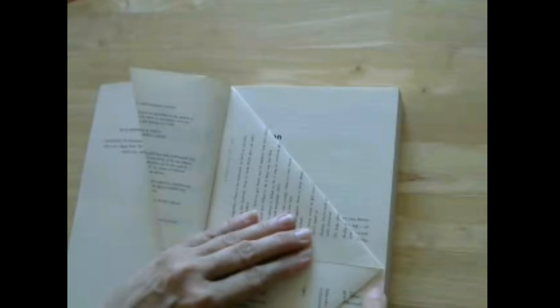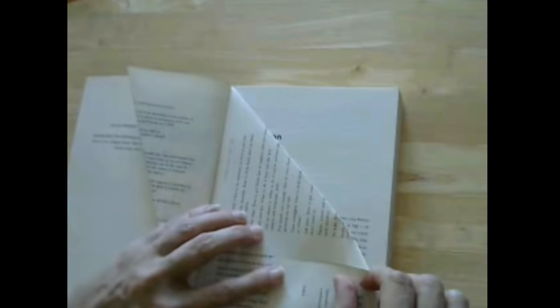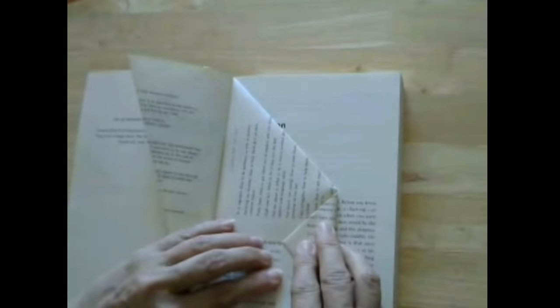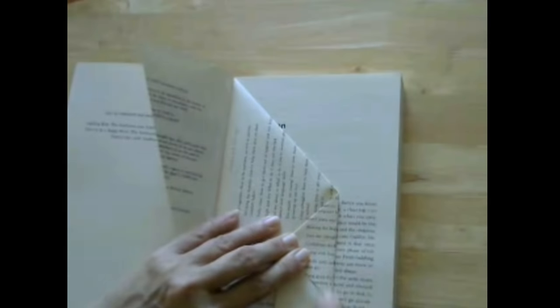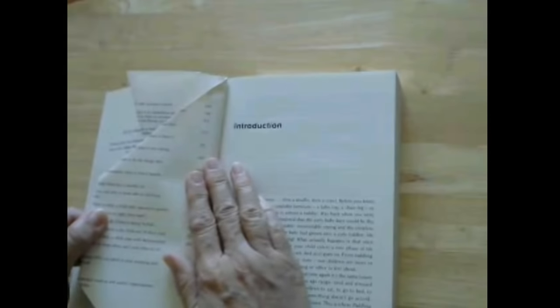And then take this point and fold it up to this little corner of this part here. Now this should keep your vase all nice and even. And then just turn that over.